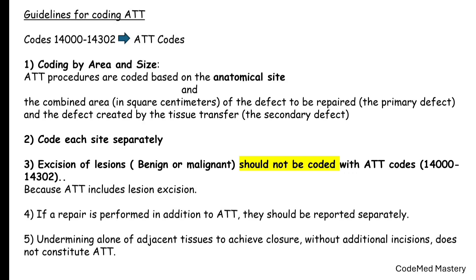Adjacent tissue transfer specifically involves additional incisions to create flaps or move tissue into the defective area, whereas undermining alone is a simple technique used to help close wounds. In undermining there is no flap creation, but in ATT there is flap creation. Therefore, undermining of adjacent tissue to achieve closure is not ATT. These are the important guidelines for adjacent tissue transfer.